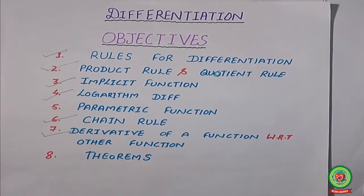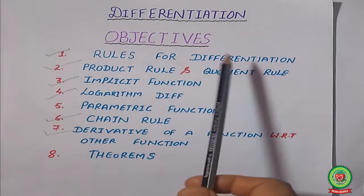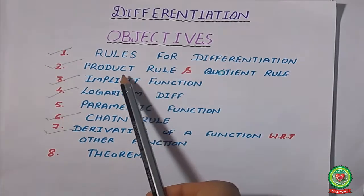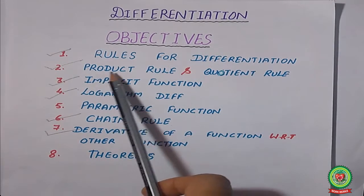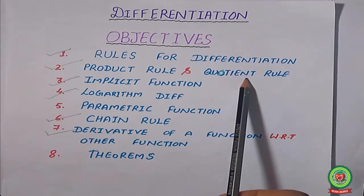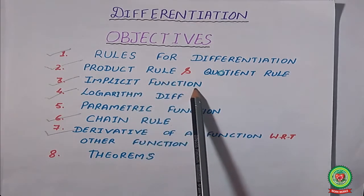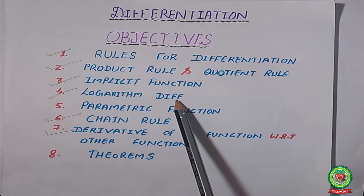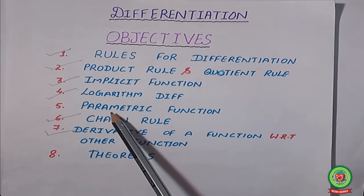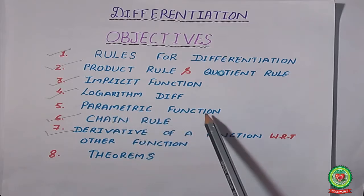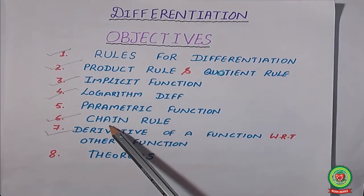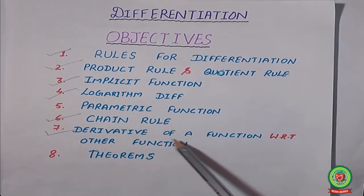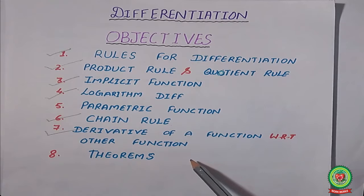Hello students, good morning. We have already started the topic differentiation. From this topic we have already done the basic rules for differentiation, product rule and quotient rule, implicit functions, and logarithmic differentiation. In our previous lecture we covered parametric functions. In continuation with this topic, today we will discuss chain rule and derivative of a function with respect to other functions. These are only parts of differentiation.